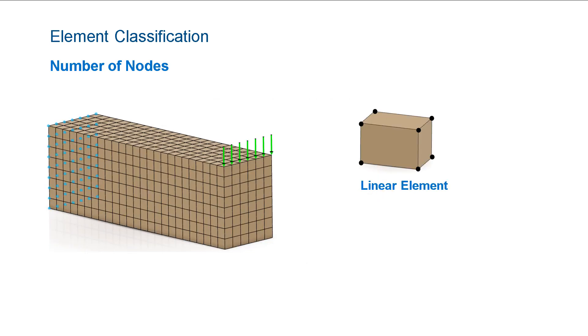Also, in the introduction to FEA video, we showed you a brick element with nodes located at the corners of the element. This is called the linear element, and it may not be the ideal element for certain structural models.